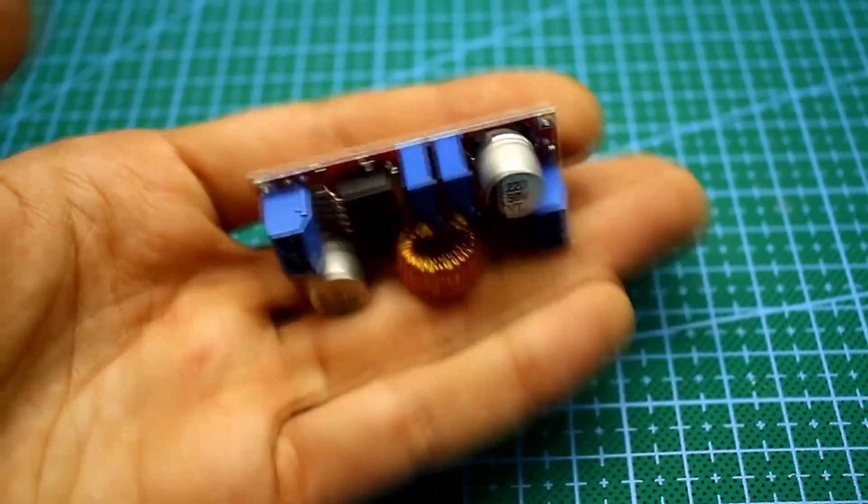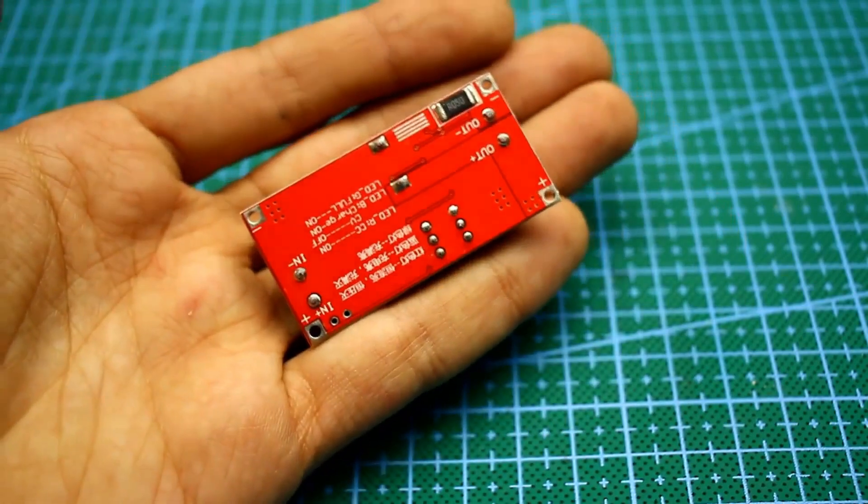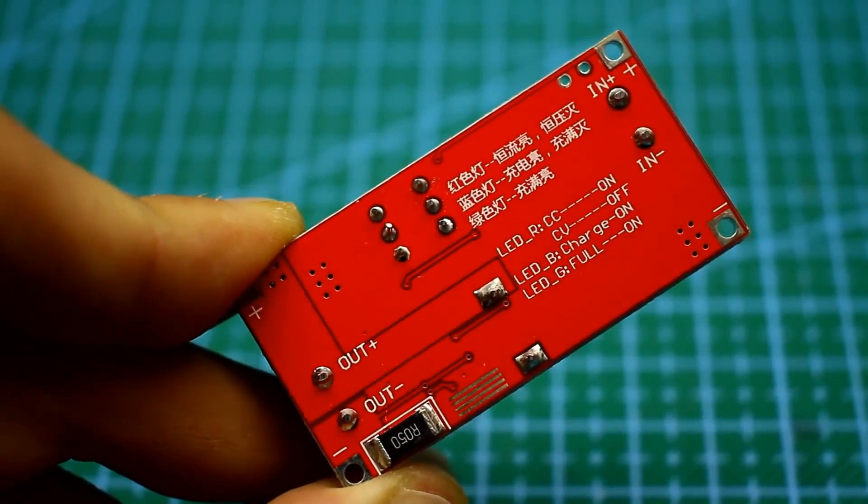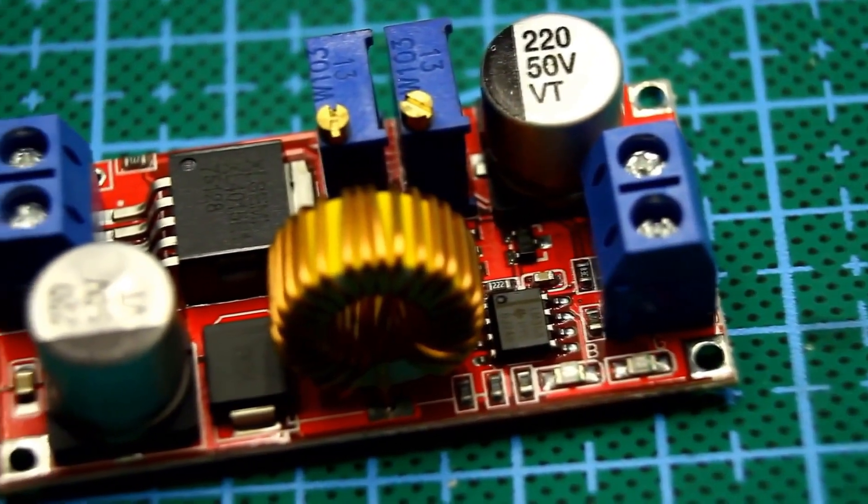Such a board is designed for a maximum current of 5 amps, however, in this case, it needs to be cooled. In our case, only 1A current is required, so it doesn't even heat up during operation.